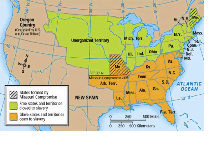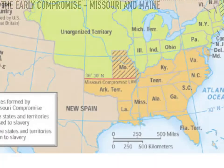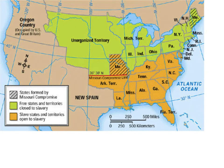That conflict centered around adding a new state to the Union. The Louisiana Purchase Territory opened up the West, and new states have been added — Alabama, Mississippi, Tennessee, Indiana, Ohio, Illinois. As these states were added, there's been a tenuous balance between Northern and Southern states — that is, between free states where there are no slaves, and slave states where slavery is legal.